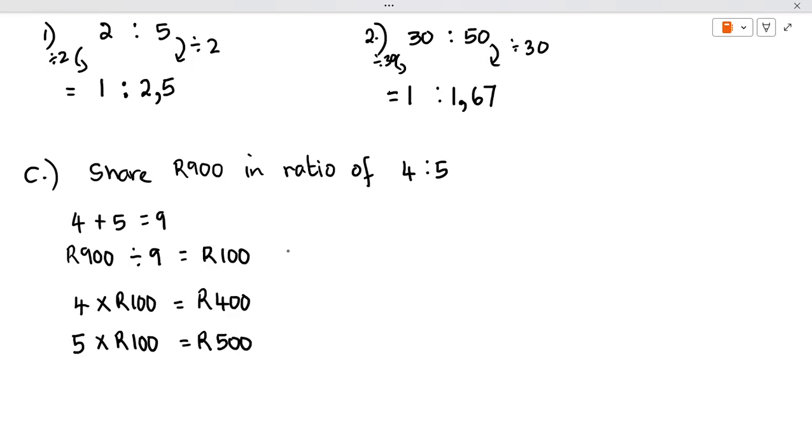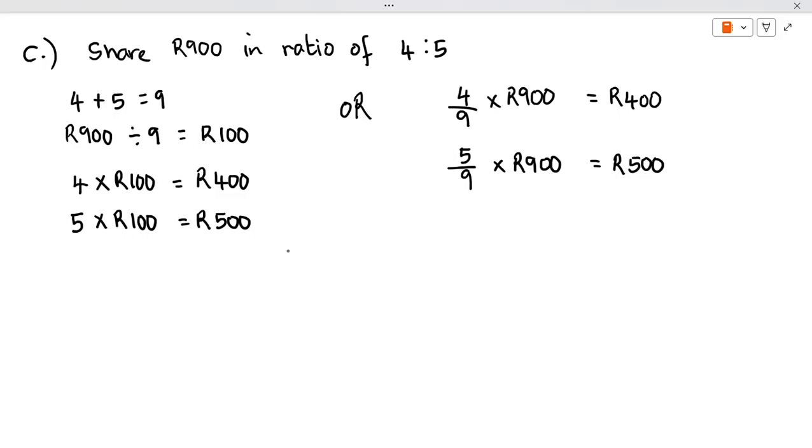Or you could go 4 plus 5 again, which is 9. So you could go 4 over 9 times 900, and 5 out of 9 times 900. That would give you 400 and 500. Also check when you get to your final answer: if you said 400 plus 500, you will get 900. It should get you back to the original that you started off with.